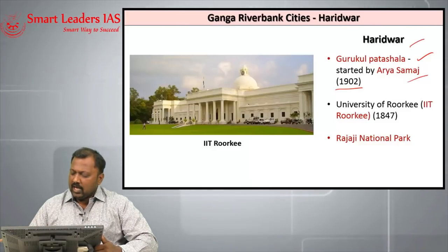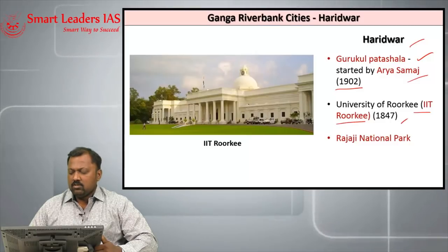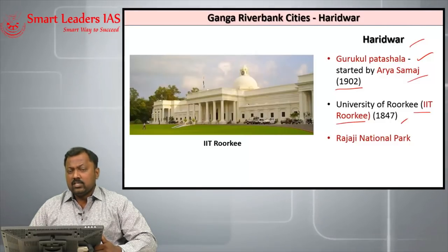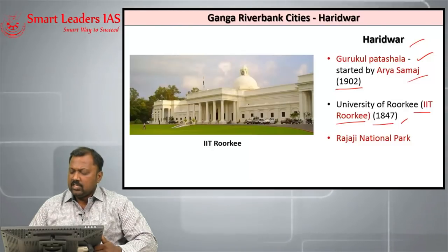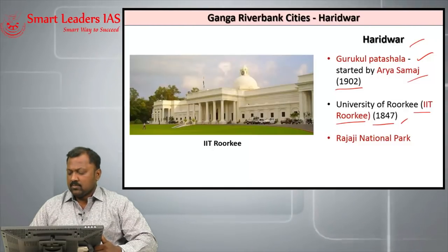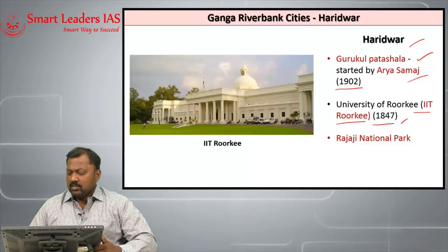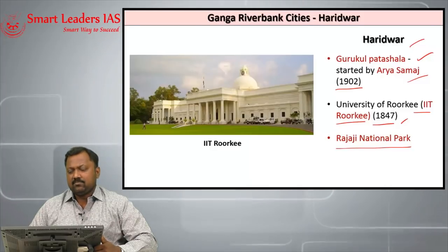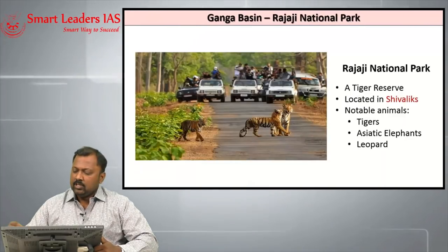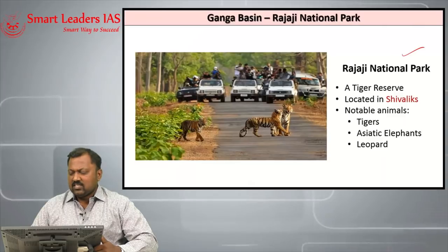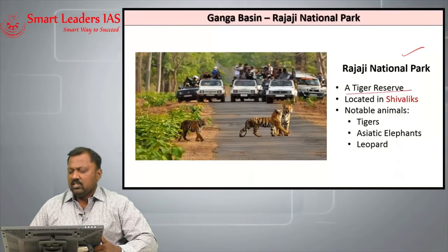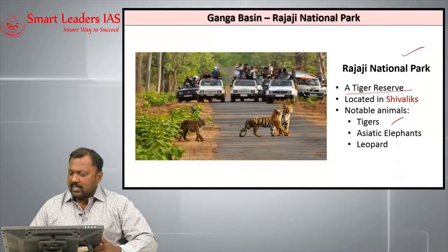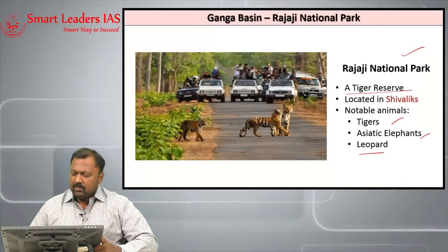Haridwar is also home to IIT Roorkee, one of the oldest institutions established in India — the oldest engineering college in India, established in 1847. Around this area is Rajaji National Park, which is also a tiger reserve. It is located in the Shivalik hills of the Himalayas, and the notable species here include tiger, Asiatic elephant and leopard.